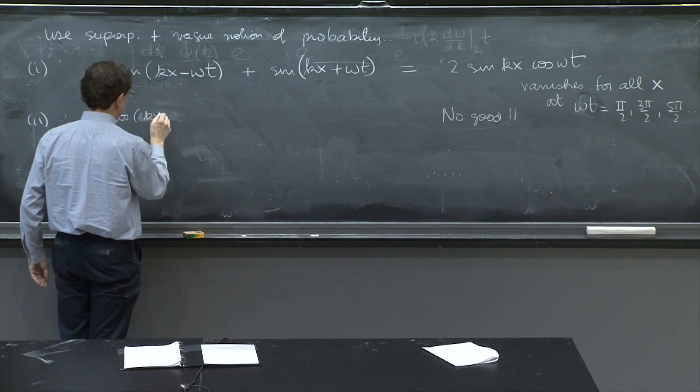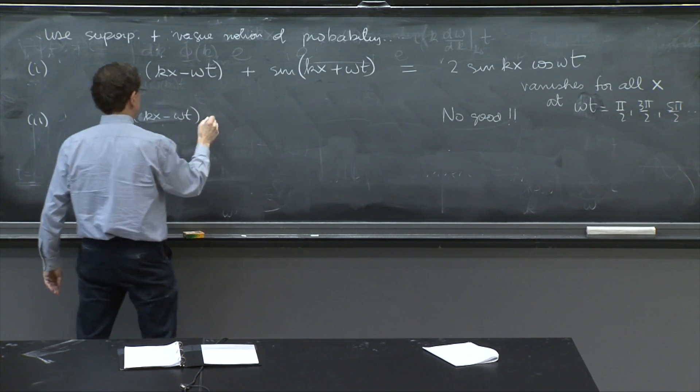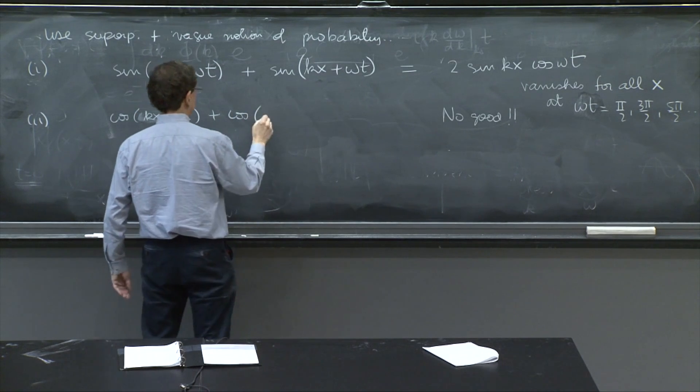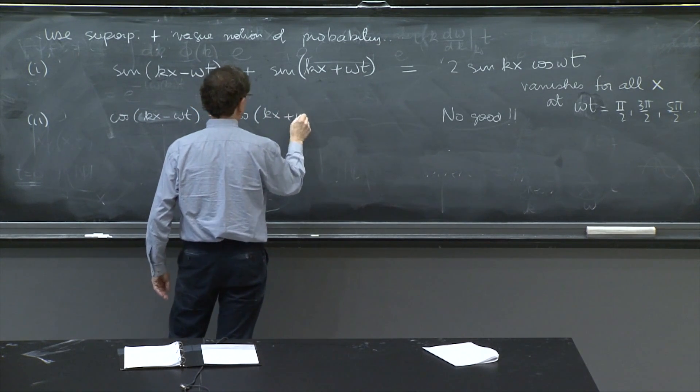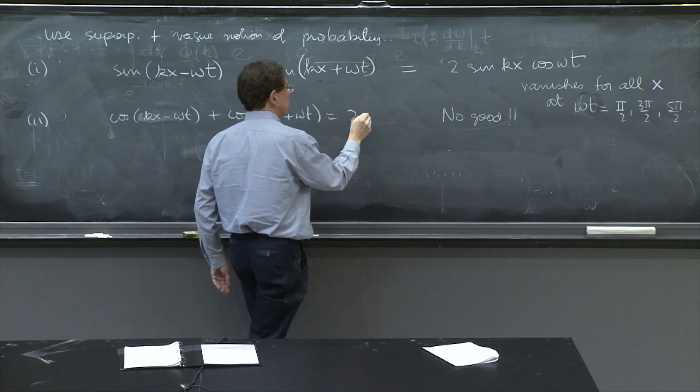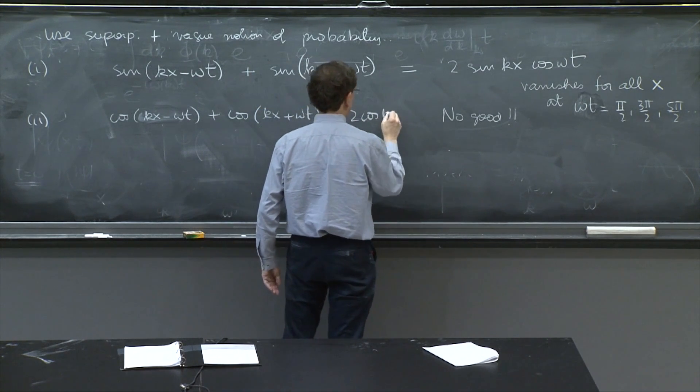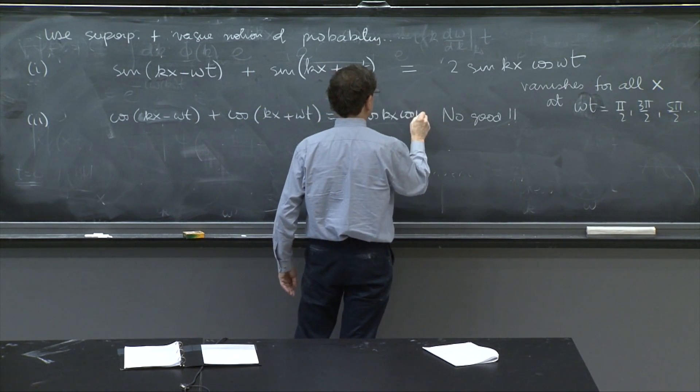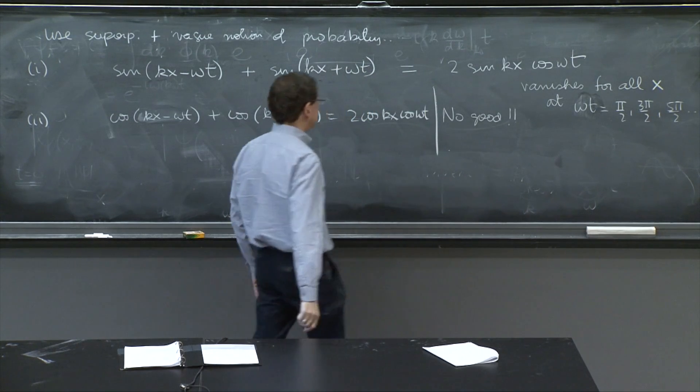Kx minus omega t plus cosine of kx plus omega t. That would be 2 cosine kx cosine omega t. It has the same problems.